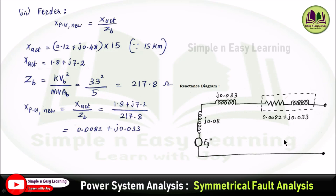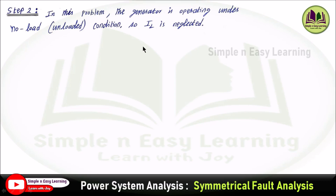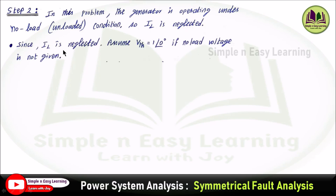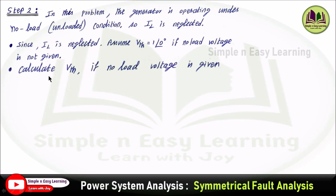Step 2: The generator is operating under no-load condition, so load current is neglected. There are two conditions: if no-load voltage is not given, assume Thevenin voltage equal to 1∠0°. If no-load voltage is given, calculate V_Thevenin from the given no-load voltage.